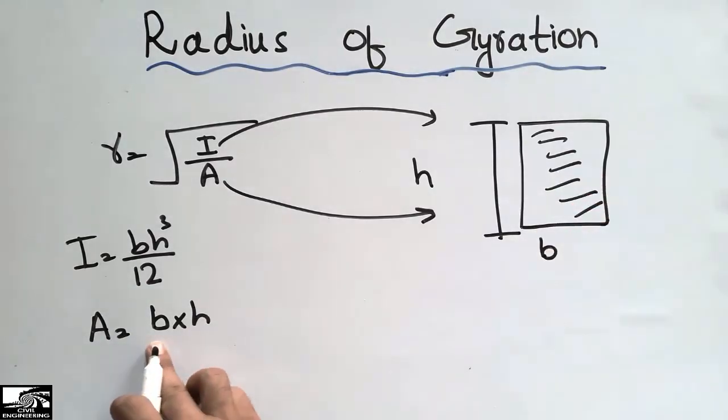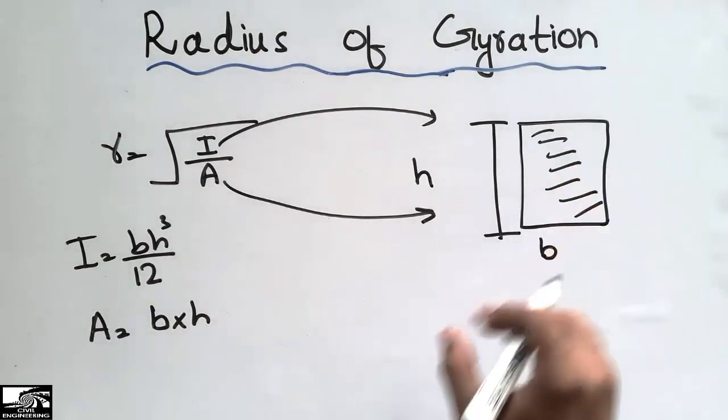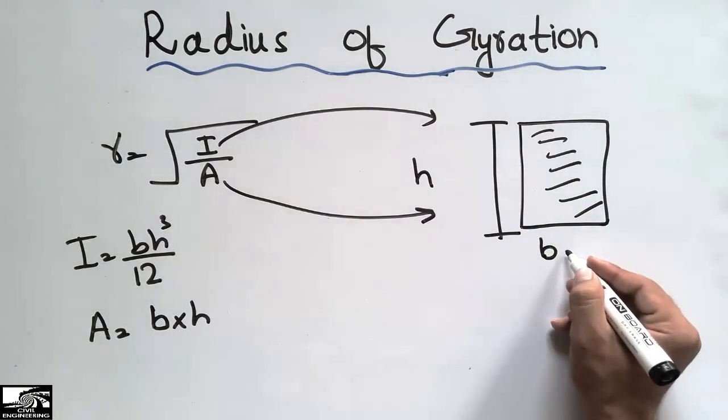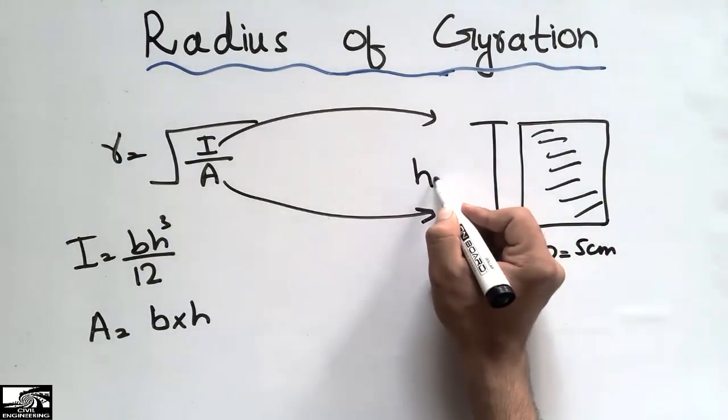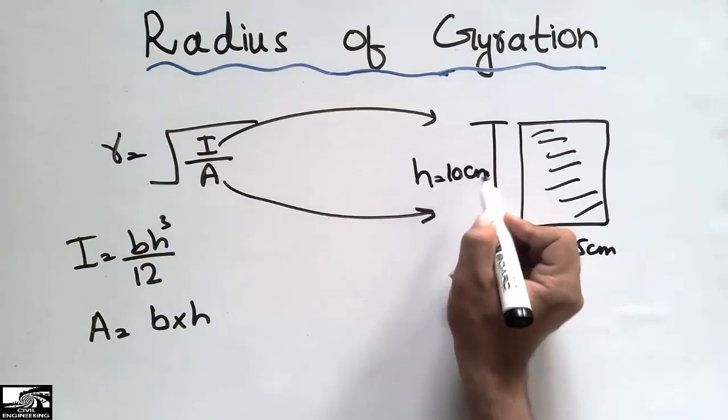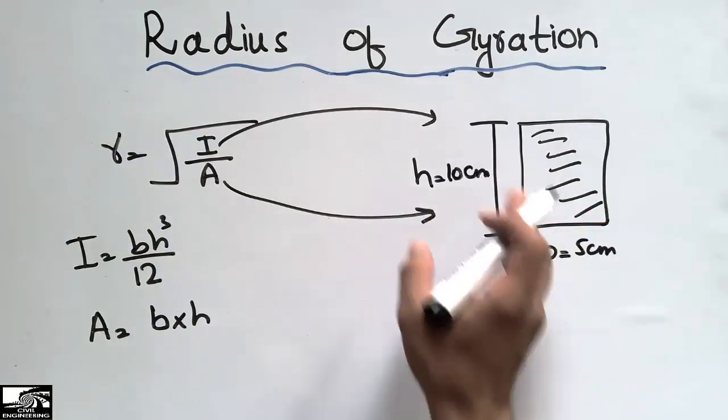Let's take an example where the width is 5 centimeters and the height is 10 centimeters. Putting these values, we will get the required quantities.